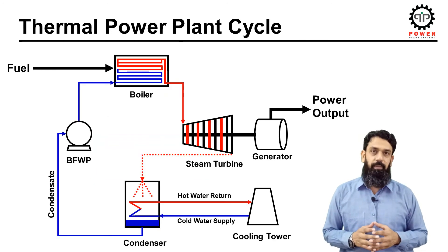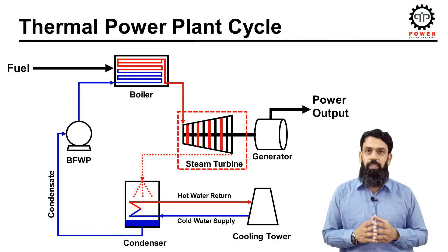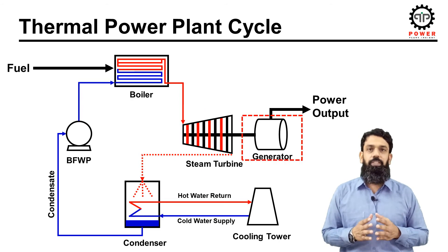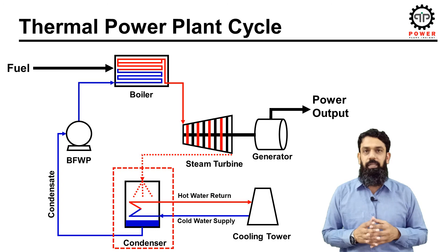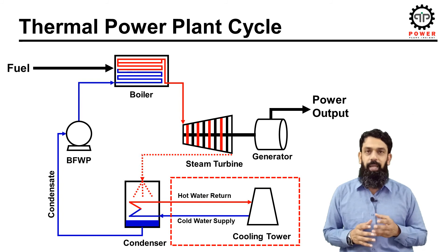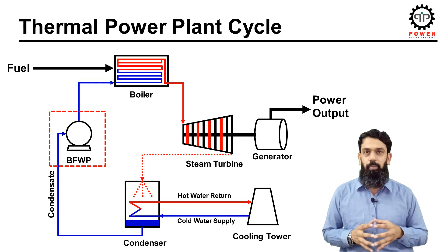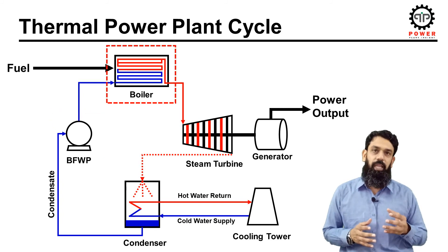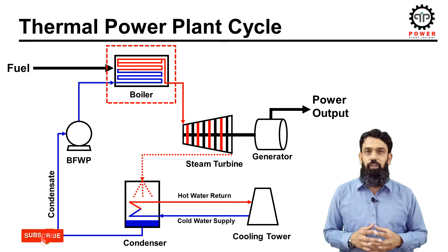Let's summarize today's discussion. Steam is generated in the boiler through combustion of fuel. The steam turbine converts the thermal energy of steam into mechanical energy. The generator converts the mechanical energy into electrical energy. Steam from the turbine enters the condenser where it is condensed; circulating water circulates through the tubes of the condenser and hot water recirculates back to the cooling tower. Condensate from the hot well is extracted through boiler feed water pumps and injected into the economizer section of the boiler, which converts the condensate back into steam — and the cycle continues.